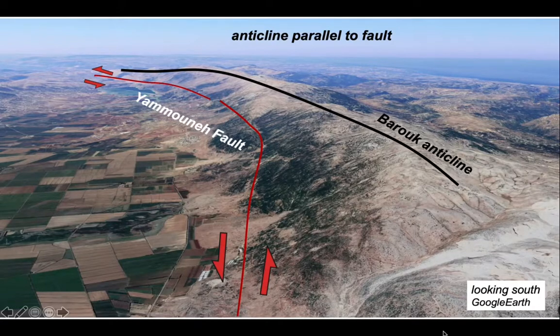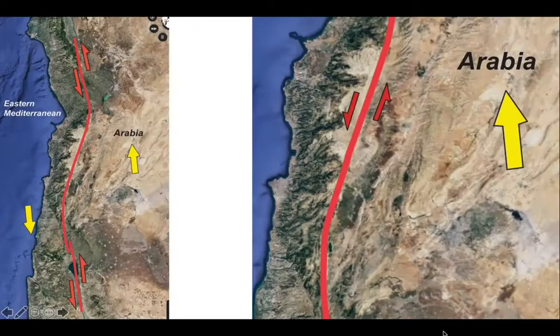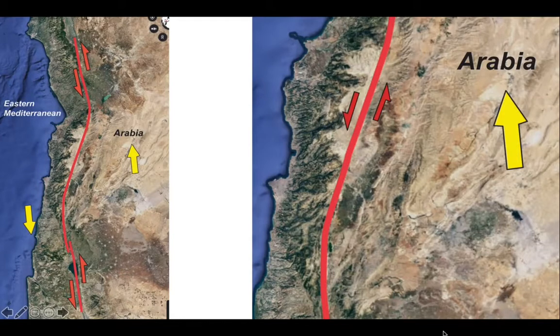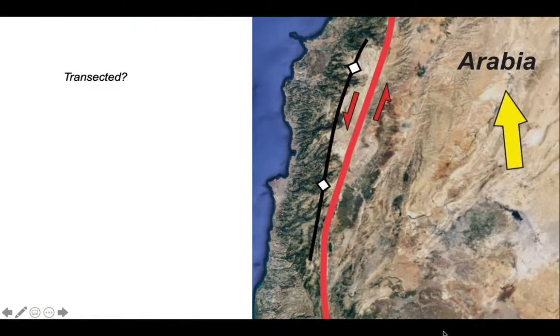Let's step even further back and look at the tectonic setting. We're on this bend on the Dead Sea Fault system where the relative motion between Arabia and the eastern Mediterranean is oblique to the trend of the fault. It's converging with the fault. And here is the trend of the fold, almost parallel to the trend of the fault.